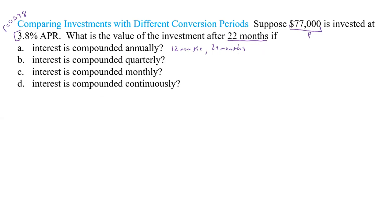For quarterly compounding, that's every three months: 3, 6, 9, 12, 15, 18, 21, and 24 months. For monthly, it's straightforward — every single month. And for continuous, we just use P·e^(rt). The annual and quarterly cases are the ones that will cause some issues because we have to handle the calculations differently.